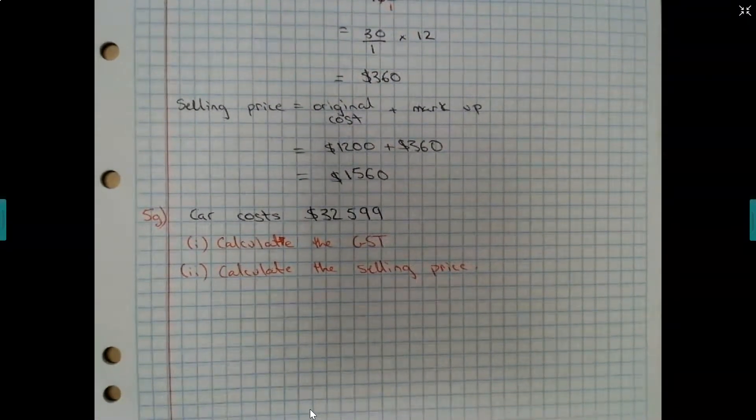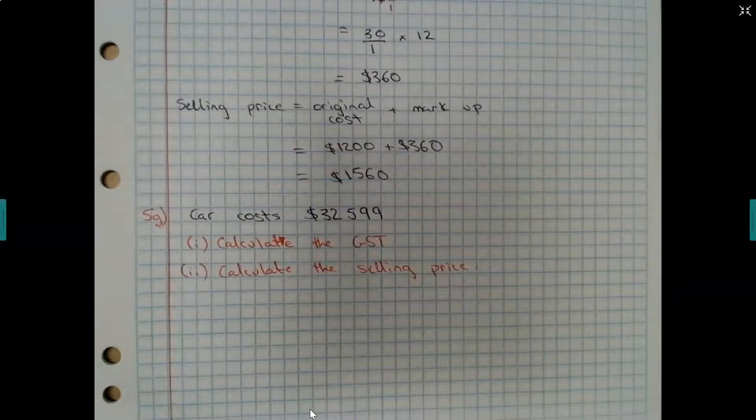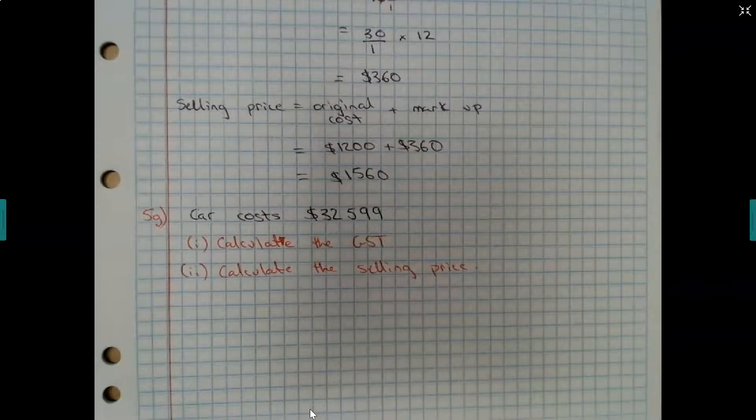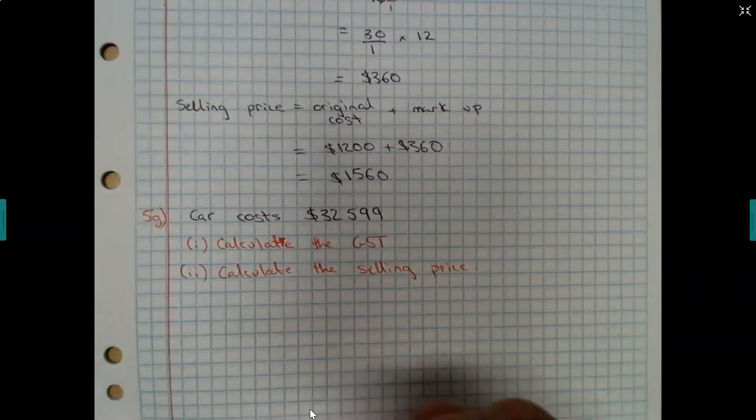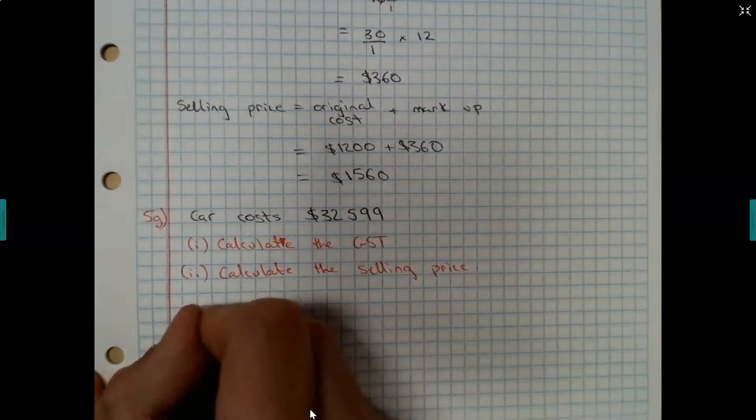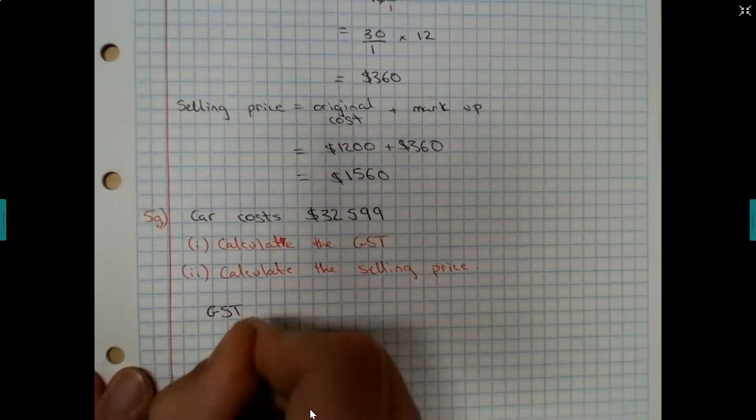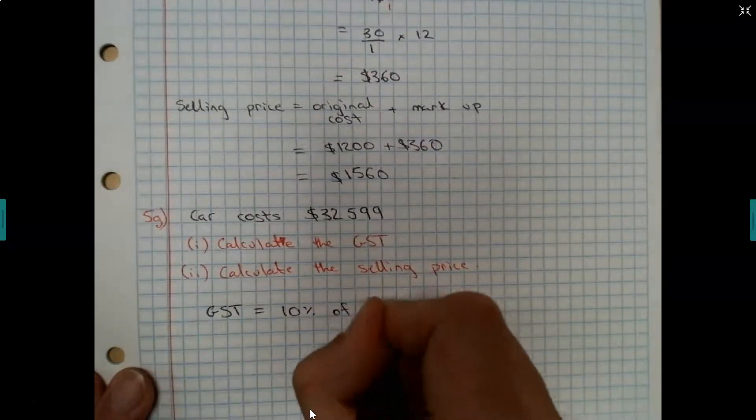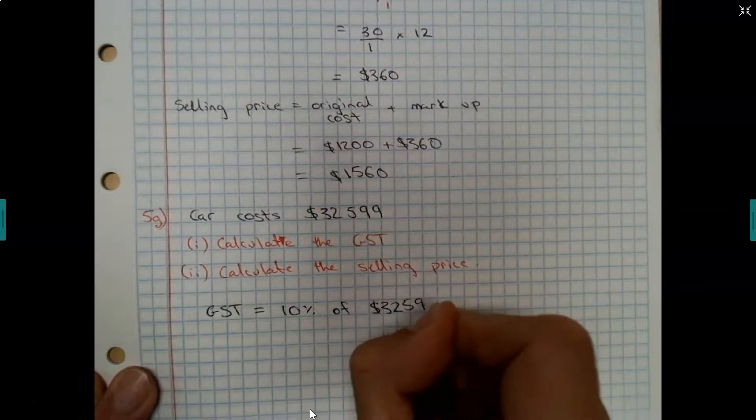So calculate the GST and then calculate the selling price. You know, when you go to a restaurant and you buy a meal, do you reckon the government takes GST? Yes. They take GST on every single service. All right. So let's work out what the GST is on this car. They told us in the question it was 10%.